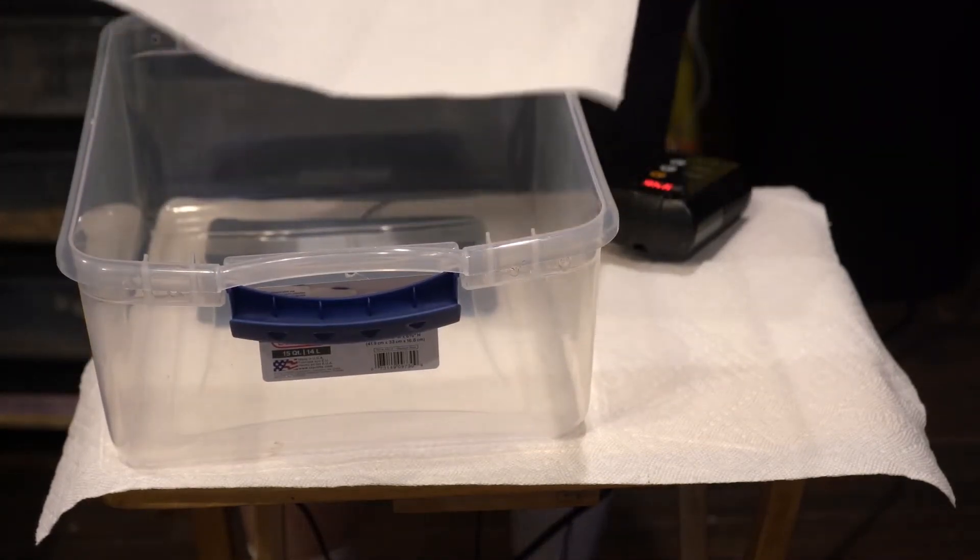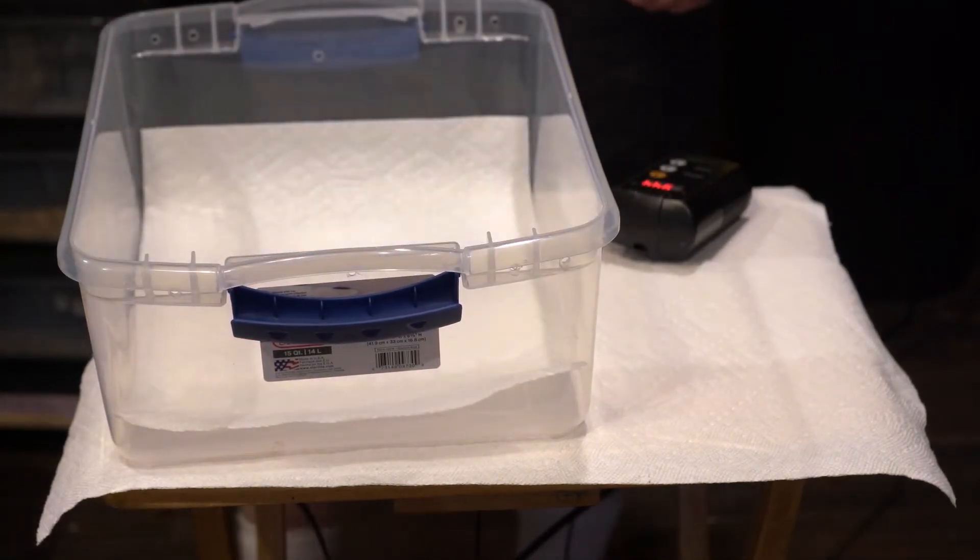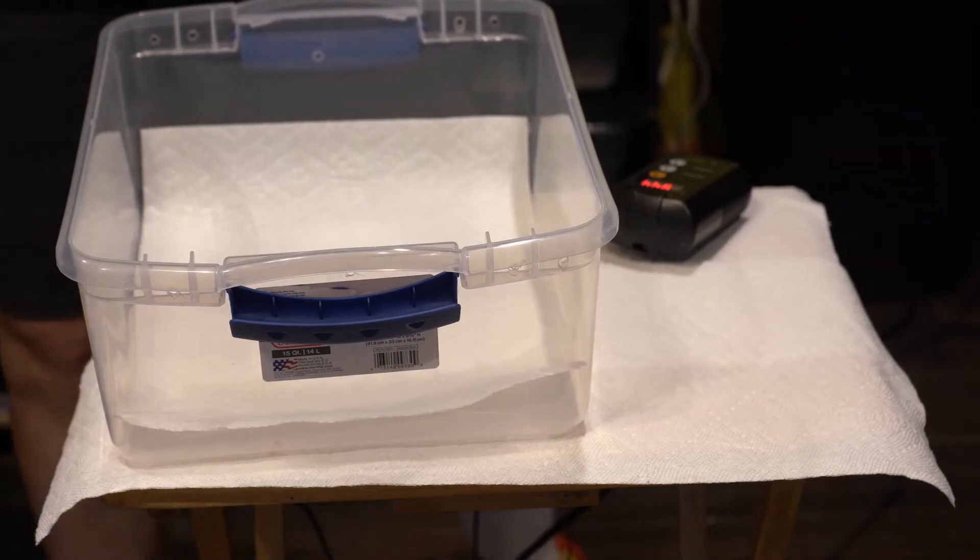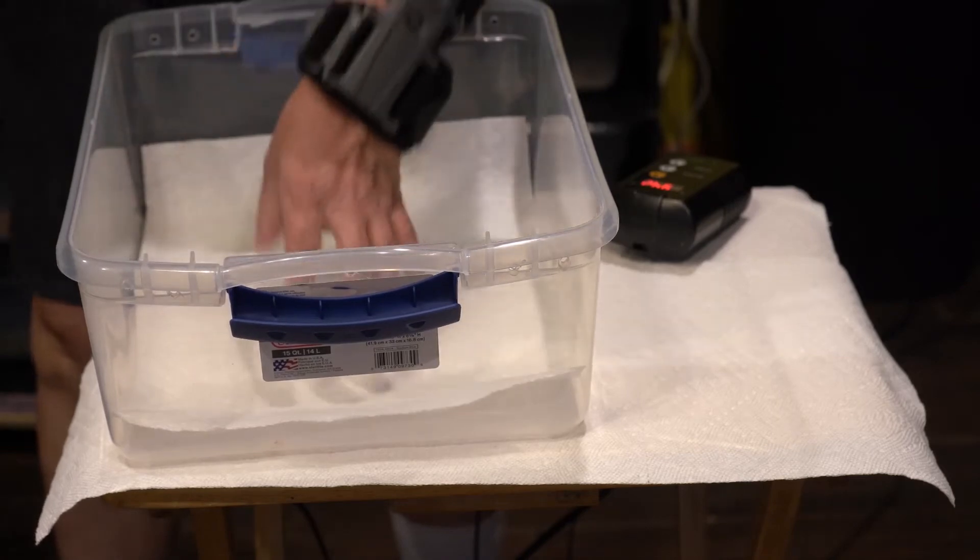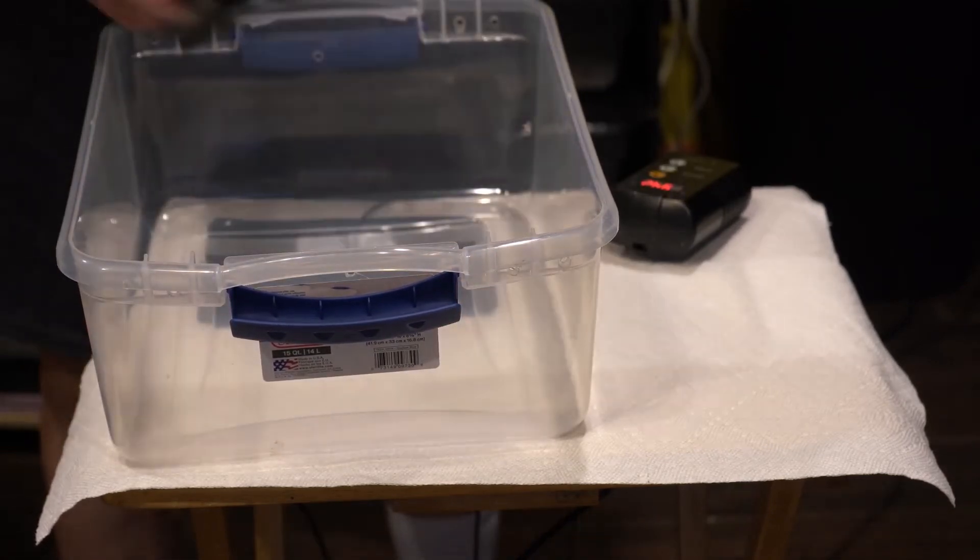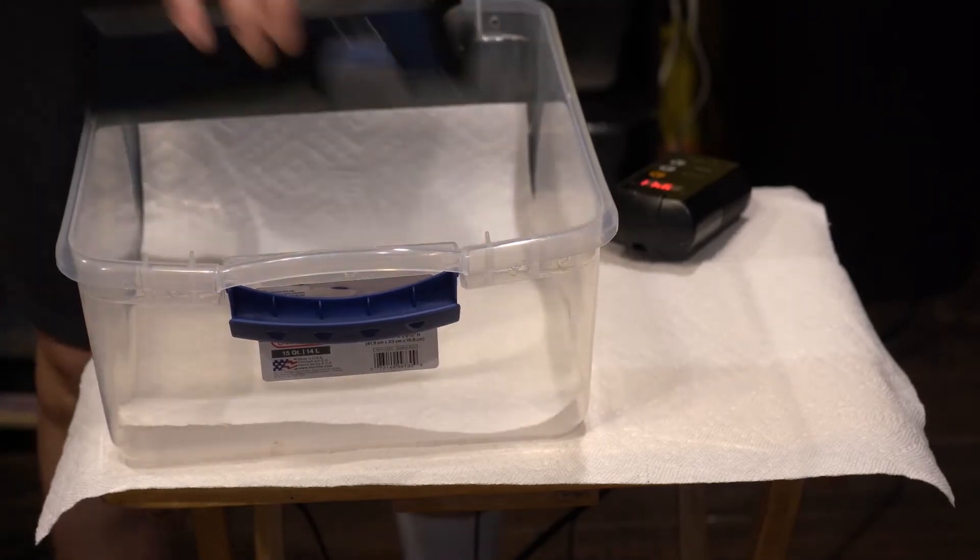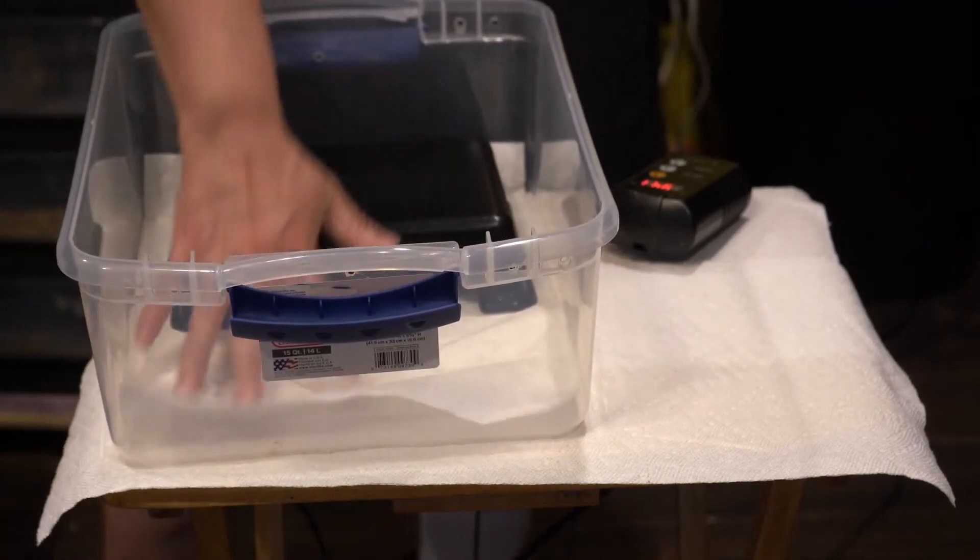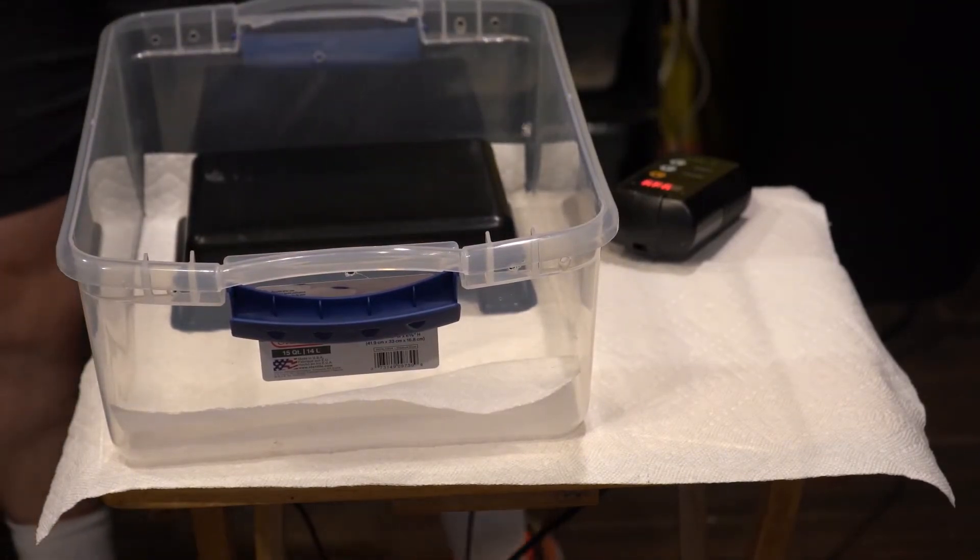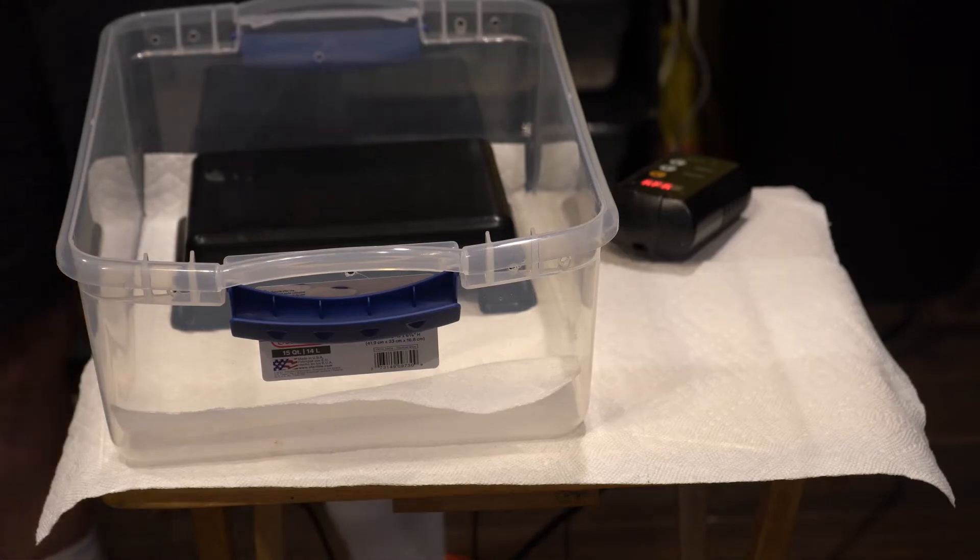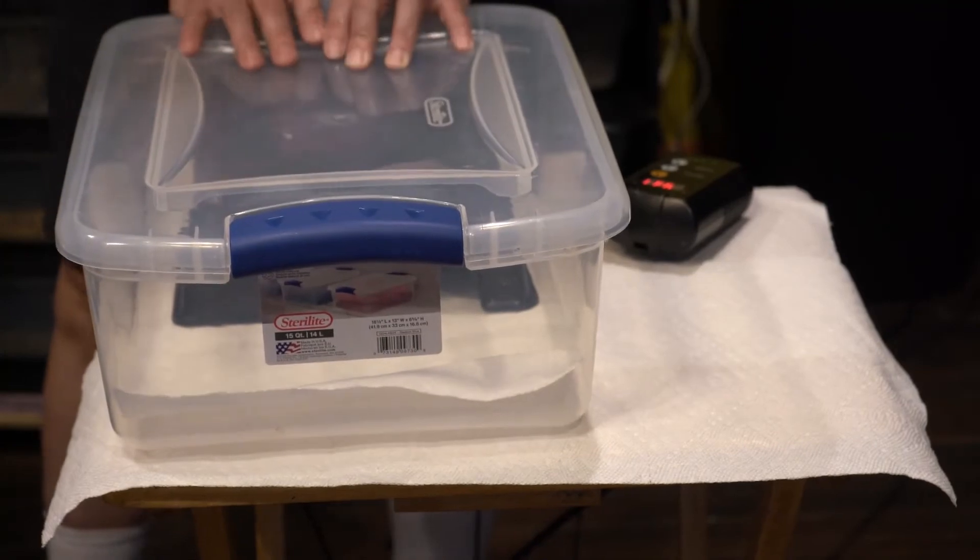The really nice thing about the paper towels is usually two sheets will cover your floor of your enclosure. You're then going to want to replace your hide and it goes over the heat mat. So whichever side you selected for your heat mat, your hide is going to go over that side. You're going to put your paper towels or your substrate, put your hide, and put the lid on.